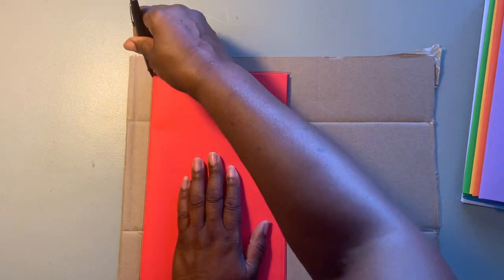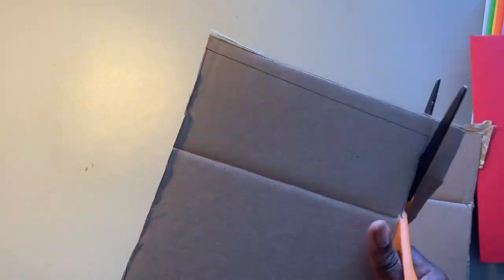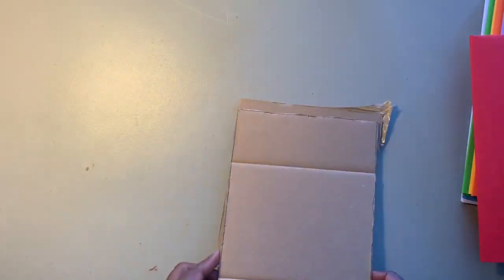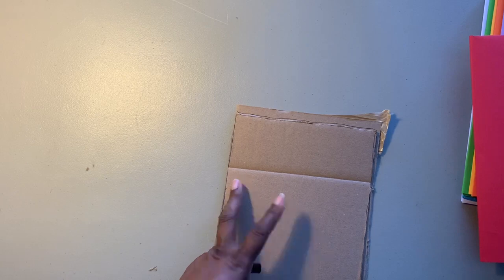Now we need to make the covers for our journal. Whatever size paper that you worked with, you're going to lay it down on your cardboard and trace around the edge. I used an old Amazon box. Then you're going to cut around the full four sides of your cardboard. Remember you need a front cover and a back cover, so I traced around and then I'm going to trim off the excess.